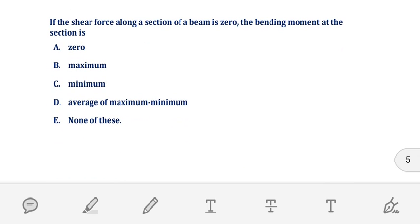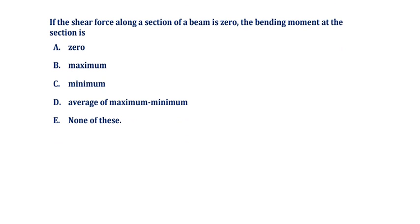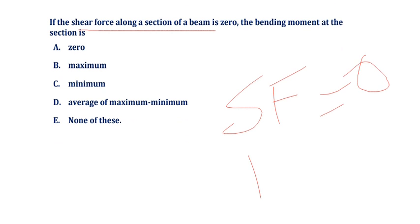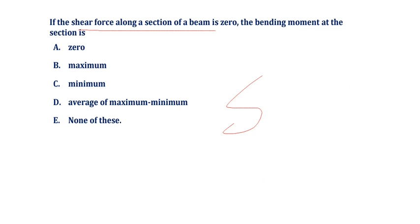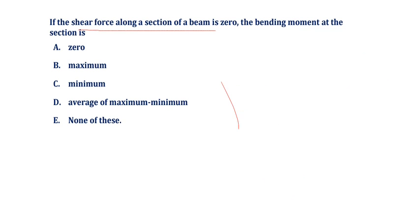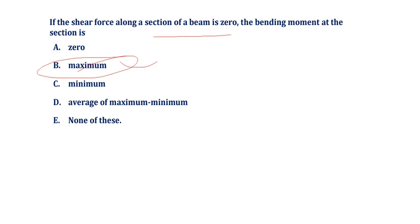If the shear force along a section of the beam is zero, the bending moment at that section is always maximum. Remember: when shear force SF equals zero, the bending moment is maximum; and when bending moment is zero, the shear force has a maximum value. So option B — maximum — is the correct answer.